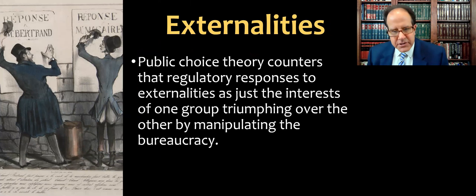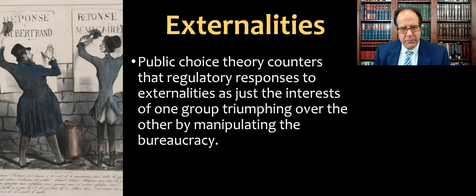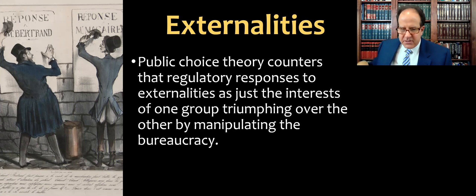Public choice theory counters that regulatory responses to externalities are just the interests of one group triumphing over another by manipulating the bureaucracy. The view is that once you have a power structure and bureaucracy in place, whoever is better at taking control of it and working the system can just get what they want at the expense of others.